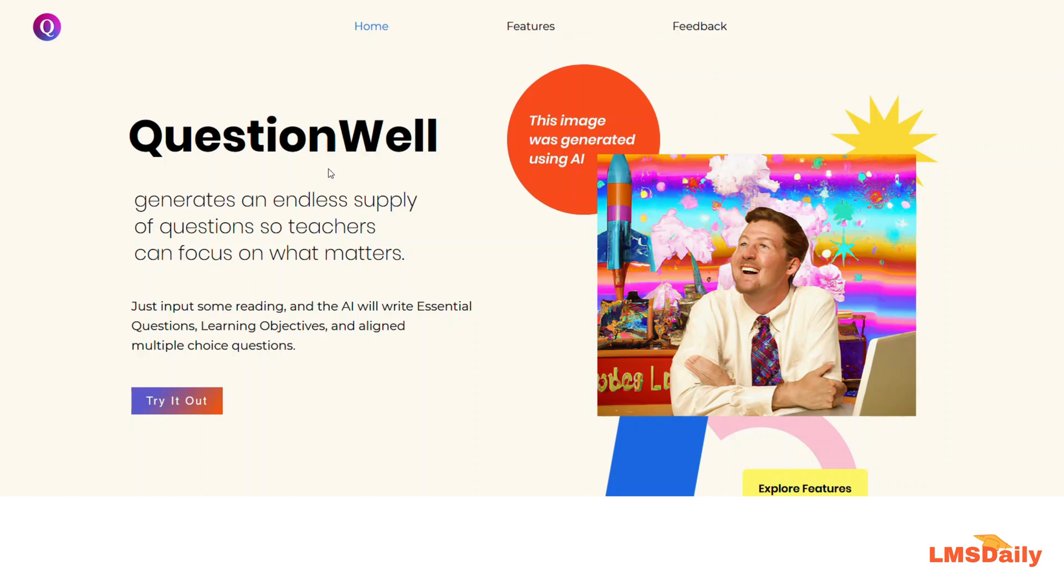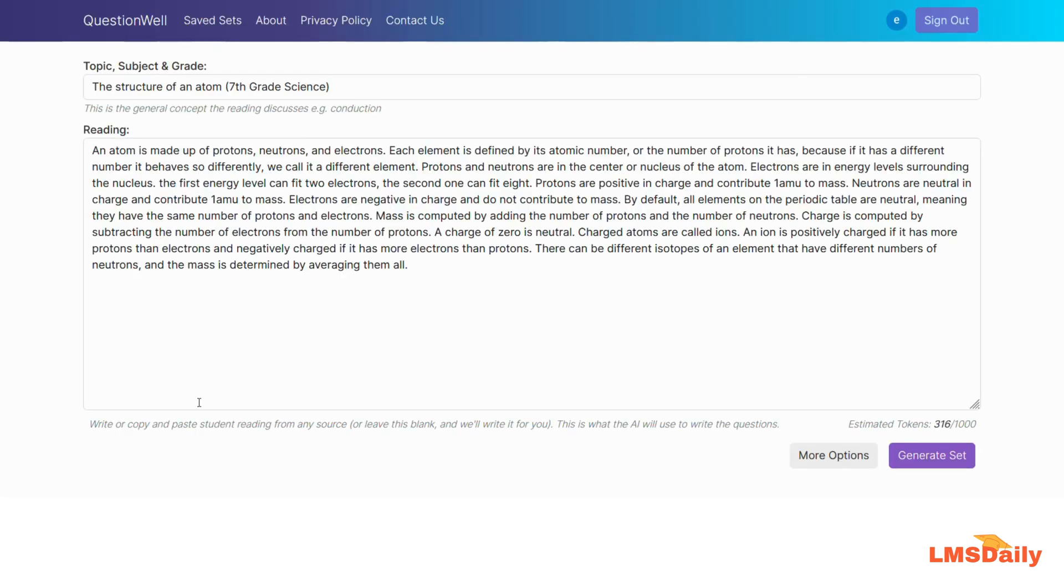You need to go to the questionwell.org website and click on the 'Try it Out' button. It will open a new tab in your browser where you need to log in using your Google account. If you're not logged in, you'll see a sign-in button that will prompt you to use your Google account to log into this portal.